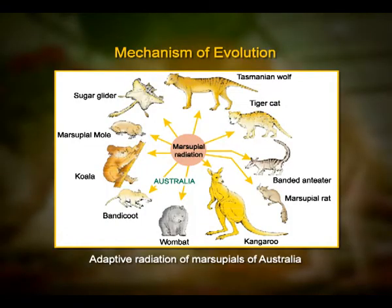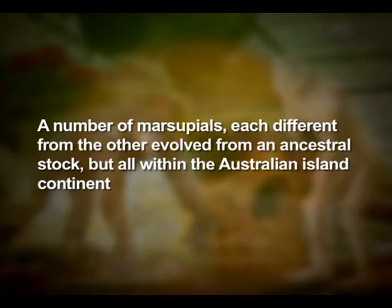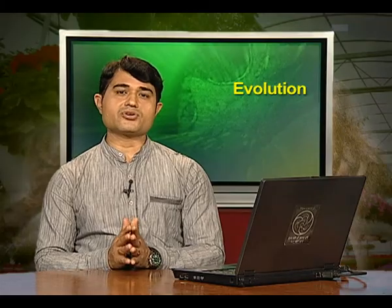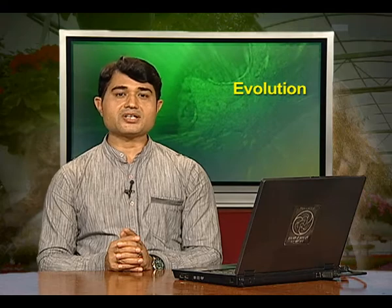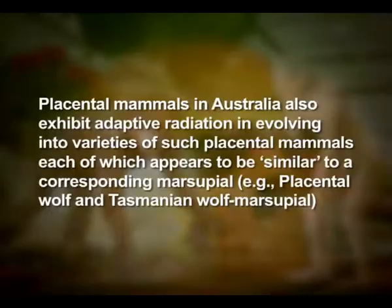Another example is Australian marsupials. A number of marsupials, each different from the other, evolved from an ancestral stock, all within the Australian island continent. Where more than one adaptive radiation appeared to have occurred in an isolated geographical area representing different habitats, one can call this convergent evolution. Placental mammals in Australia also exhibit adaptive radiation, evolving into varieties of placental mammals, each of which appears to be similar to a corresponding marsupial. For example, the placental wolf and Tasmanian wolf are marsupials.